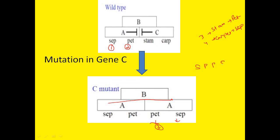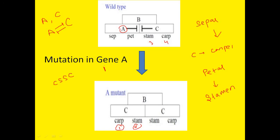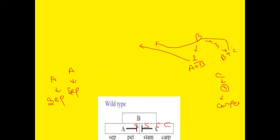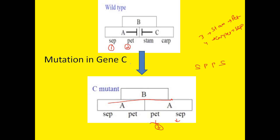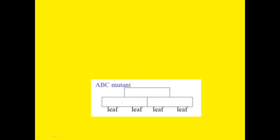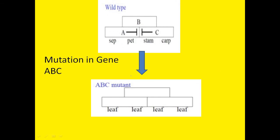The resulting pattern when C is mutated is: sepal, petal, petal, sepal. In summary: mutation in class A gene (APETALA 2) leads to a flower with carpel, stamen, stamen, carpel. Mutation in class B gene leads to sepal, sepal, carpel, carpel. Mutation in class C gene (AGAMOUS) leads to sepal, petal, petal, sepal. When all three genes are mutated simultaneously, no whorls are formed and a leaf-like pattern develops.